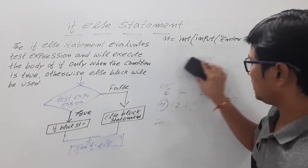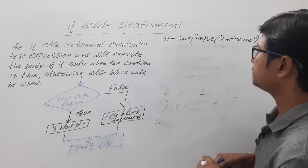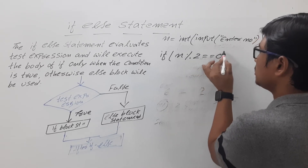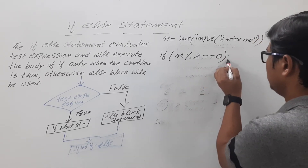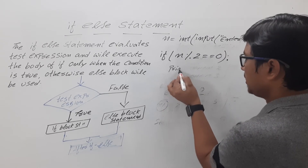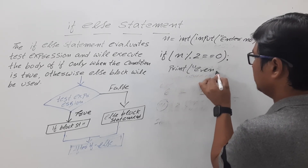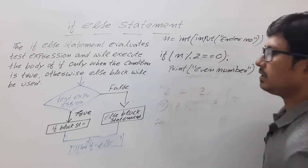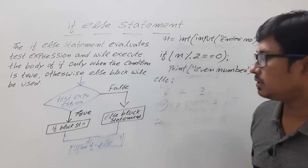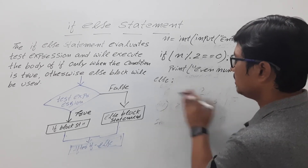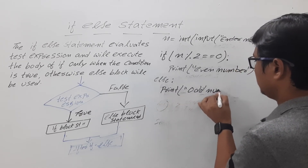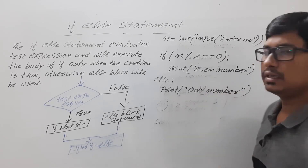With this logic, let me write the program. I write: if n modulus 2 == 0, then indentation starts and we print even number. For the else block, we use the keyword else with a colon, press enter, indentation starts, and we print odd number. That's all — it is a very simple program.